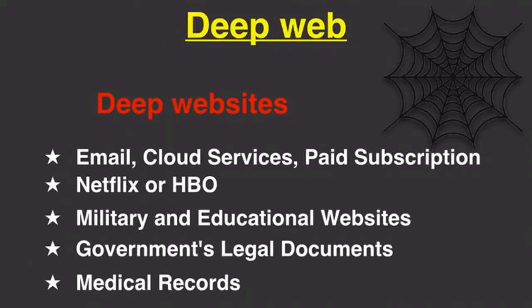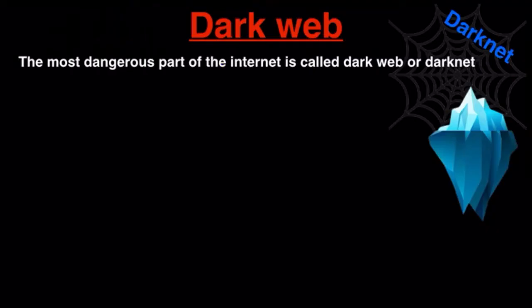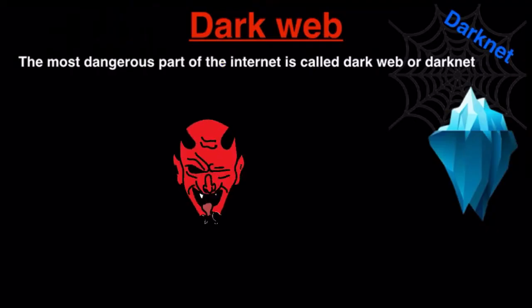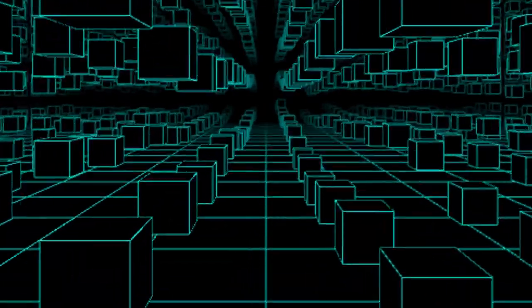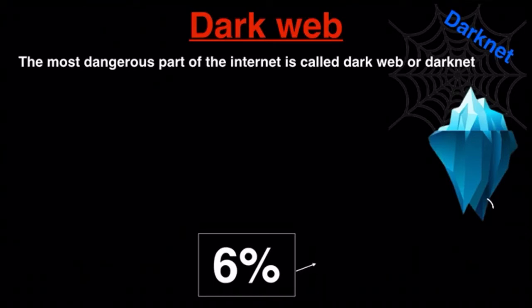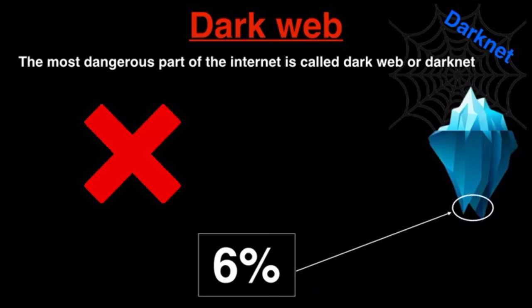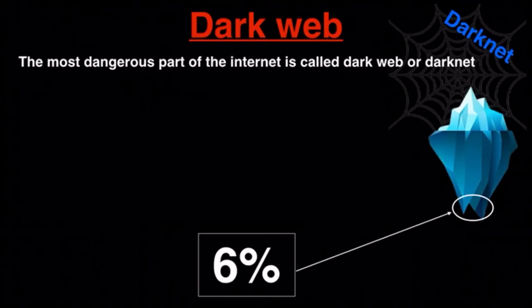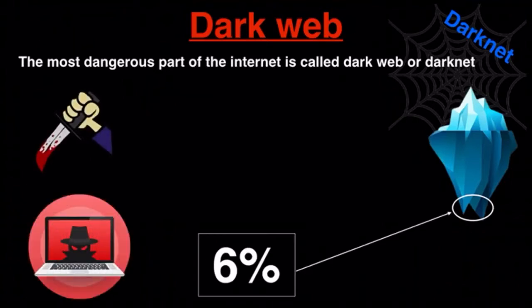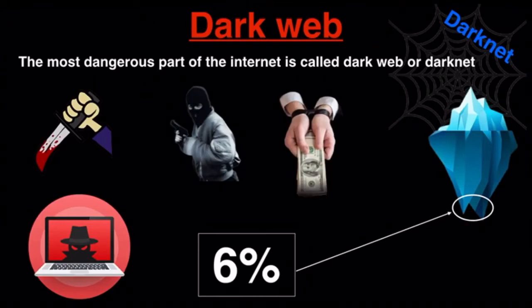Let's talk about the third layer: dark web. The most dangerous part of the internet is called the dark web or dark net. It's the remaining 6% of the internet. The dark web is illegal to use. All criminal activities are executed on the dark web — it's a haven for killers, hackers, attackers, extortionists, and so on.